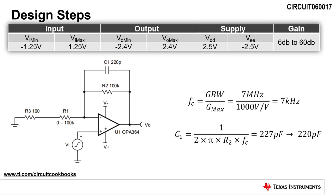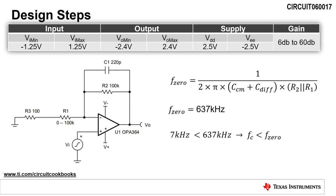We calculate a cutoff frequency of 7 kilohertz. Using the cutoff frequency we just calculated, we can now calculate C1 using the equation 1 divided by 2 times pi times R2 times Fc. We calculate a capacitance of 227 picofarads. Since 227 picofarads is not a standard value, we will use the next closest value of 220 picofarads, as shown in this schematic.